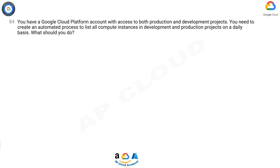You have a Google Cloud Platform account with access to both production and development projects. You need to create an automated process to list all compute instances in development and production projects on a daily basis. What should you do?